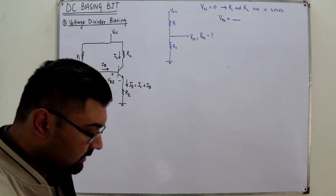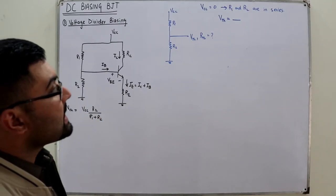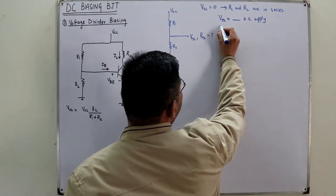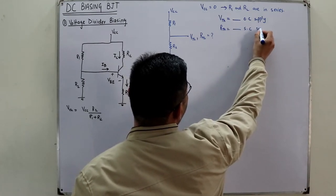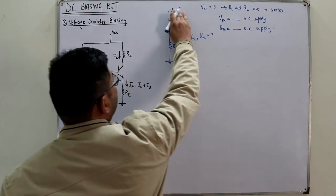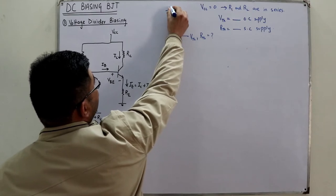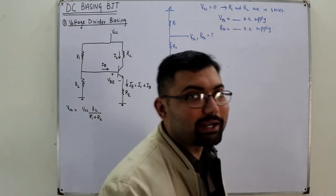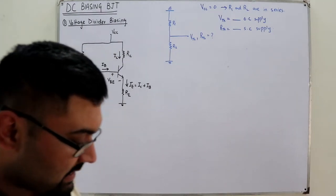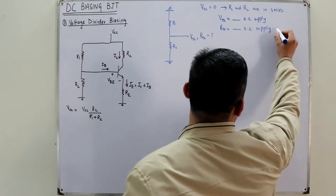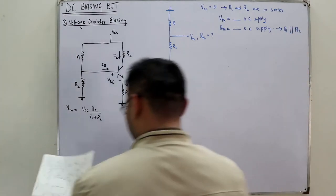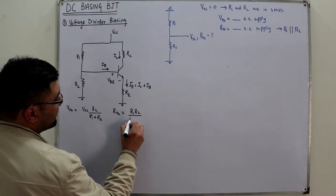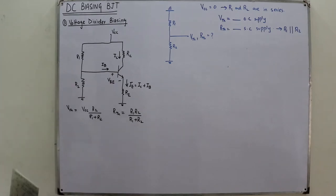To find RTH, you short-circuit the supply. When both terminals are grounded, R1 and R2 are both connected between ground, meaning they are in parallel. So RTH equals R1 in parallel with R2, which is R1 times R2 divided by R1 plus R2.